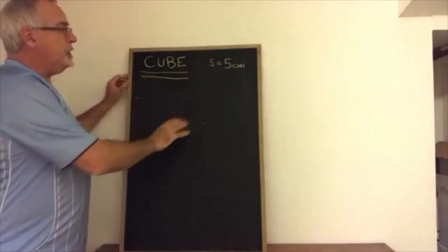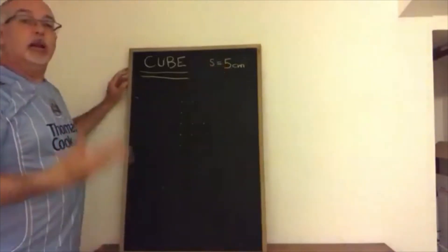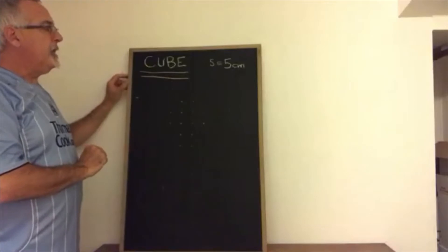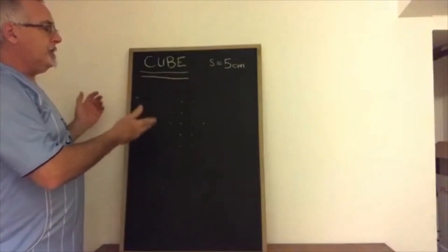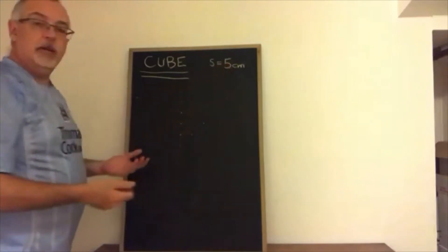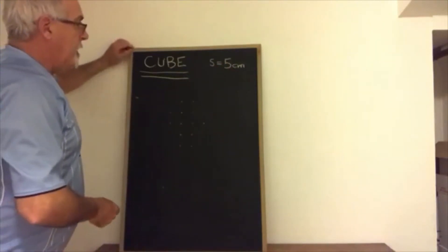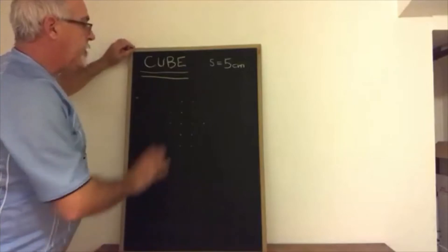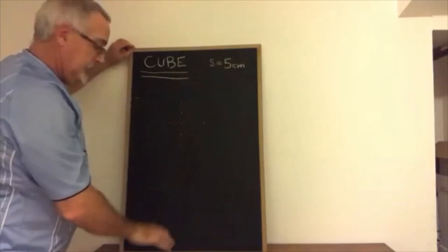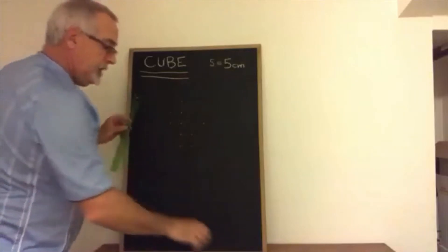The cube I'm going to use has a side length of five centimeters and I'm going to draw it life-size. I'm not going to use scale in this example for this video. So therefore all of the side lengths of the squares that I'm going to draw are going to be five centimeters in length. I'm going to very quickly draw my net of this cube on this chalkboard.